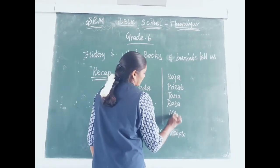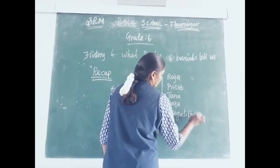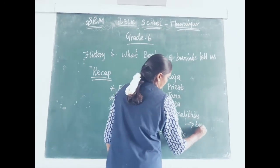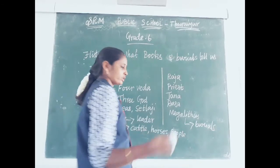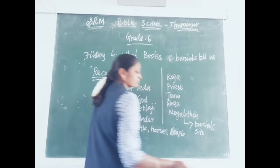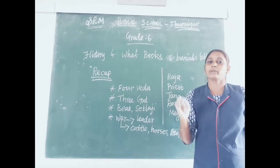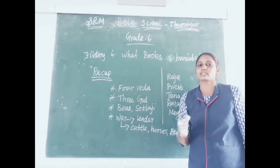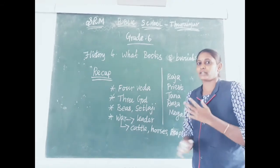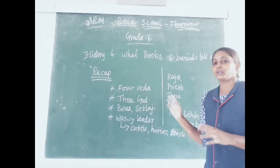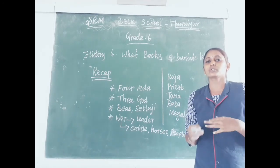Last, we discussed about Megalithic burial sites — the burial site, and the methods used for burying a dead person. Important places like Beas, Sutlej, and important burial sites were also discussed. I hope you all understand — we already completed this lesson before class, and today I taught it for your revision and recap, and so you could understand the map.